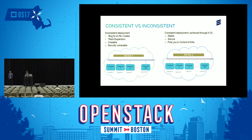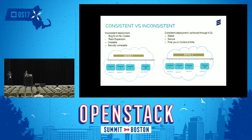If you see infra 1 closely, most of the computes are on a different level. For example, compute 1 is on version X, compute 2 is on version X, but compute 3 is on version Y, and the last compute is on version X. So most of the computes are at a different level and this is an inconsistent deployment. This inconsistency in the network may be caused by different reasons.